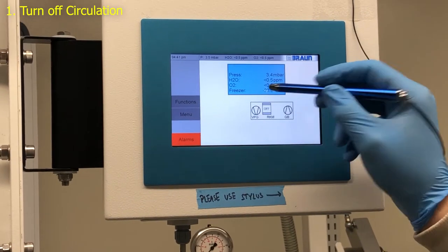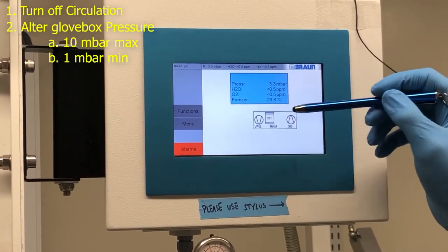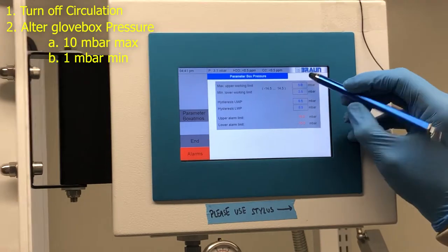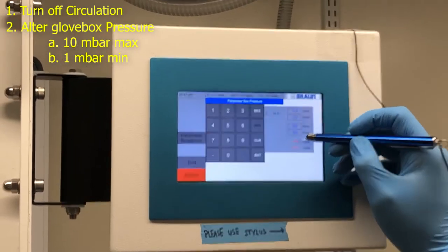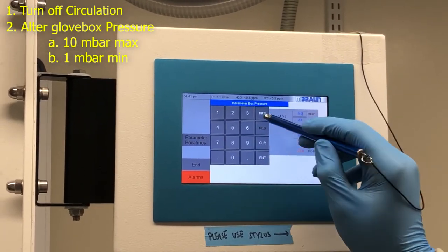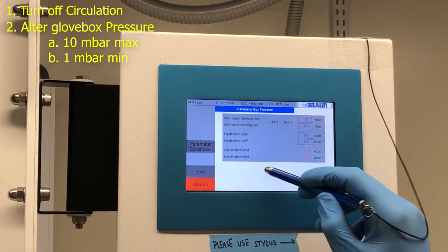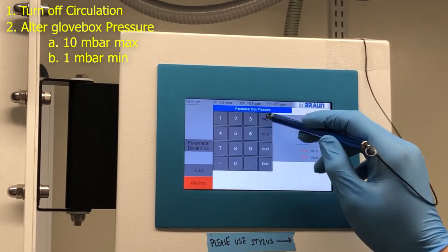Then you're going to go ahead and alter the glovebox pressure. You go to the menu, and you can alter from here. Our upper limit is going to be 10 millibar. So you want to go ahead and just enter 10. And our lower limit is going to be 1.